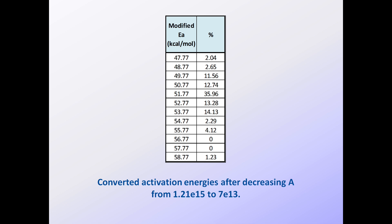Before we move on, however, let's look at the final set of converted kinetics in this table. The A factor is now 7E13, and each EA value in the original table has been reduced by 4.23 kilocalories per mole.